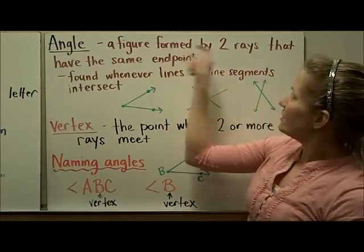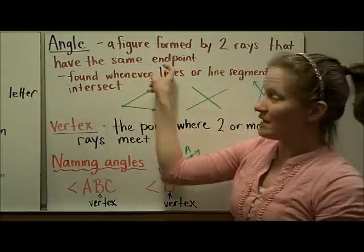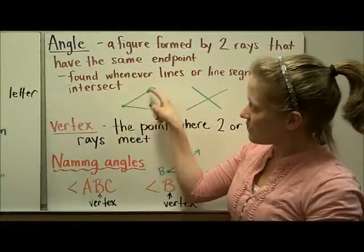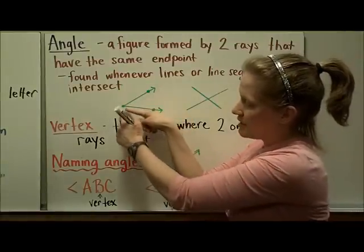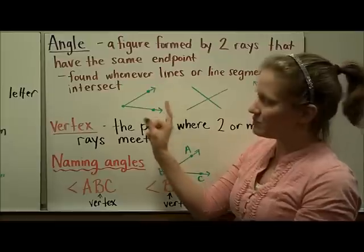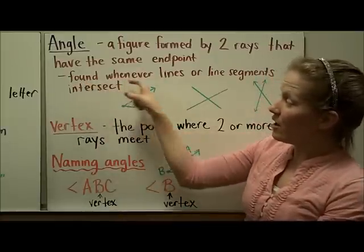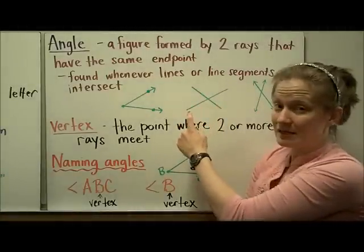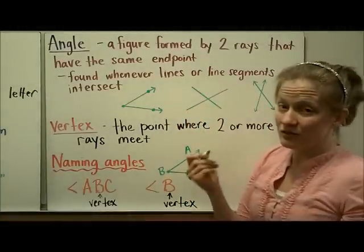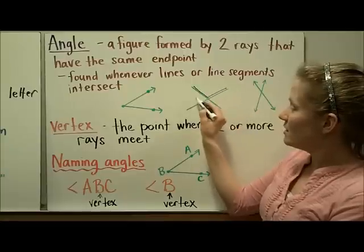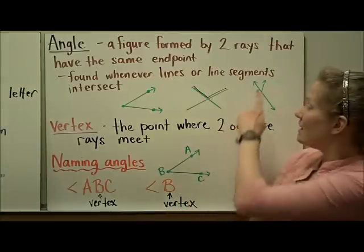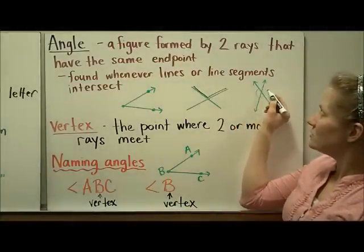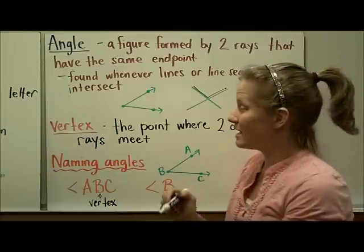An angle is a figure formed by two rays that have the same endpoint. Here are two rays that meet at an endpoint, forming an angle — the opening there. An angle can also be found whenever lines or line segments intersect. Here are two intersecting line segments, and this actually forms four angles. Two lines intersecting also forms four angles where those lines intersect.